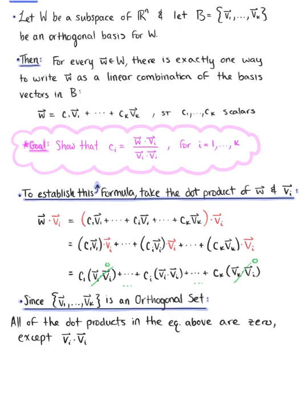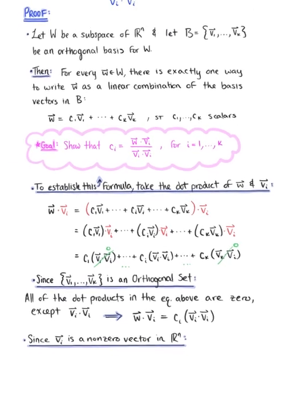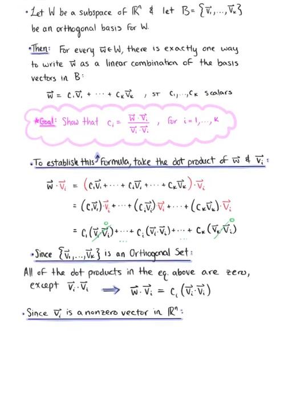Now since the set of vectors v sub 1 through v sub k is an orthogonal set, we know that all of the dot products in the above equation are 0, with the exception of vector v sub i dotted with itself. So we can rewrite this as vector w dotted with vector v sub i being equal to the arbitrary scalar c sub i multiplied by the dot product of vector v sub i with itself.